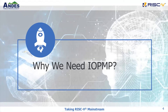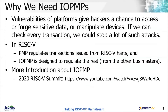So, why do we need IOPMP? Vulnerability of platforms gives hackers a chance to access sensitive data or manipulate devices. If we can check every transaction on the platform, we could stop a lot of such attacks. Inside a RISC-V core, we have the PMP in charge of regulating transactions issued from it, and the IOPMP is designed to regulate the rest of transactions — the transactions issued from other bus masters. For more introduction, you could refer to the video shown at the 2020 RISC-V summit.